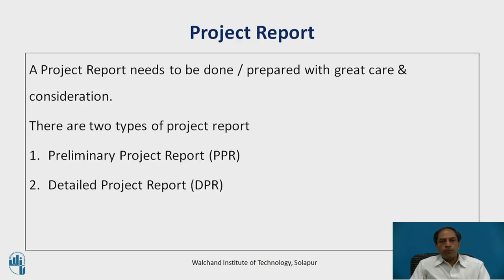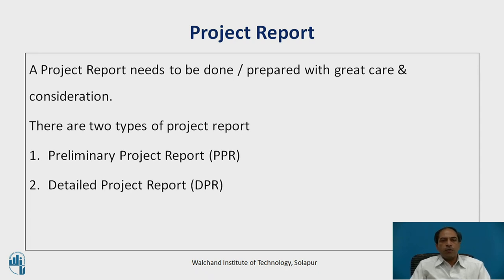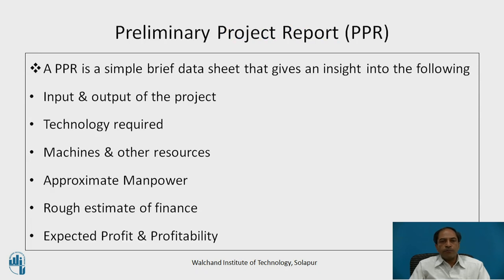As we already know what a project report is and why we need to take great care with project report preparation, generally we classify the project report into two types. The first is called the Preliminary Project Report, abbreviated as PPR, and the second is the Detailed Project Report, DPR. A PPR is a very simple, brief data sheet.